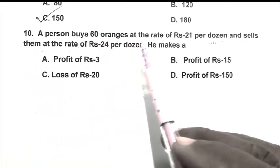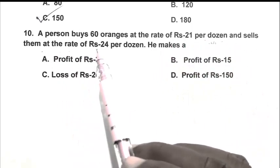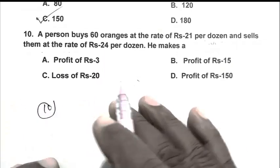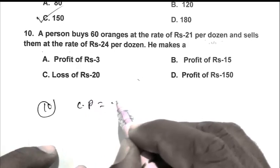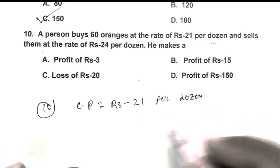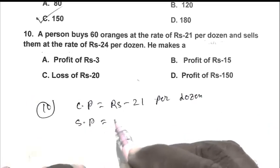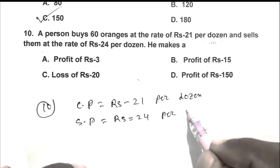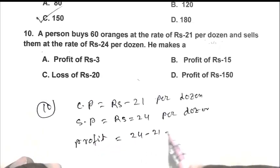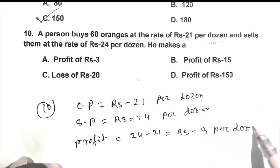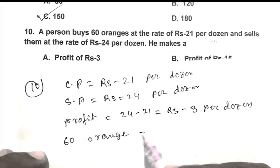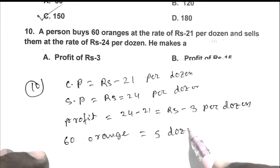Question number 10. A person buys 60 orange at the rate of rupees 21 per dozen and sell them at a rate of rupees 24 per dozen. He makes a. So friend question number 10, first price rupees 21 per dozen, selling price rupees 24 per dozen. So profit 24 minus 21 that is rupees 3 per dozen.